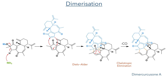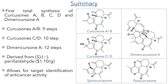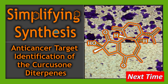So with that dimerisation we have completed the synthesis of five members of the Quercusone family. This work is the first total synthesis of these five compounds. The researchers were able to produce Quercusones A and B in just nine steps, C and D in ten steps, and Dimer Quercusone A in twelve steps, all derived from S-perialdehyde which is quite cheap at just over a dollar per gram. These compounds are highly sought after for their anti-cancer activity, and the synthesis of these compounds has allowed for the target of their anti-cancer activity to be identified. We'll look at this target identification in the next Simplifying Synthesis video, so make sure you subscribe and hit the notification bell to see when it goes live.